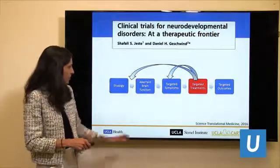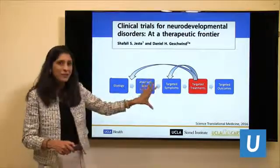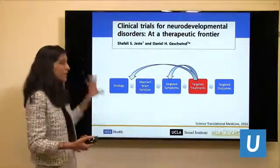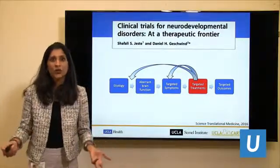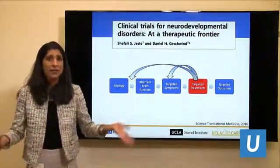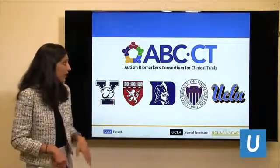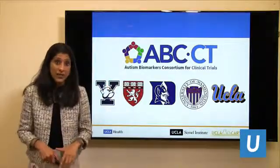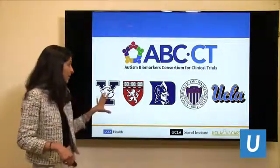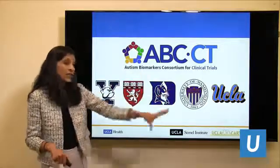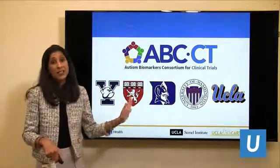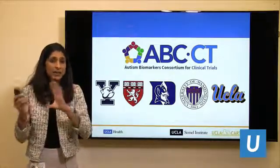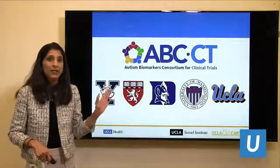To map differences in brain function across the different types of autism, we need a big consortium and big sample sizes. The National Institutes of Health have recently funded a large effort identifying biomarkers of autism. We are one of five sites — Yale, Harvard, Duke, University of Washington, and UCLA — studying EEG, eye tracking, and behavioral assessments to understand subtypes based on brain function in children with autism. That study just started this year.